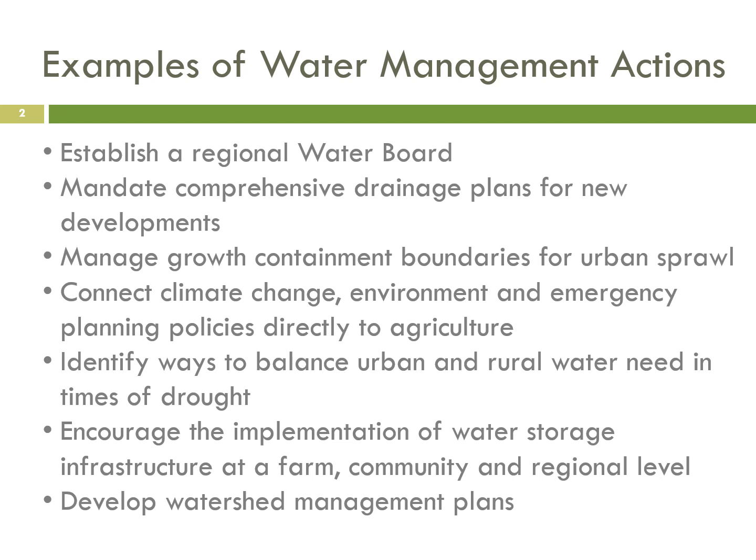There's a need to connect issues such as climate change, the environment, and emergency planning policies directly to agriculture across the planning framework, such as the regional growth strategy, official community plan, and zoning bylaws. It can also be important to identify ways to balance urban and rural water needs in times of drought, and to encourage the implementation of water storage infrastructure at a farm, community, and regional level — and we know that there have been initiatives to that effect recently in the Comox Valley.